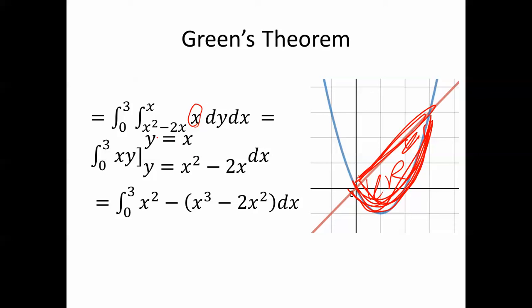And x goes from 0 to 3, because these curves intersect at 0, 0, and 3, 3. So that's what we get for the double integral.